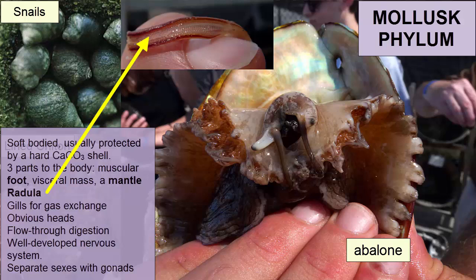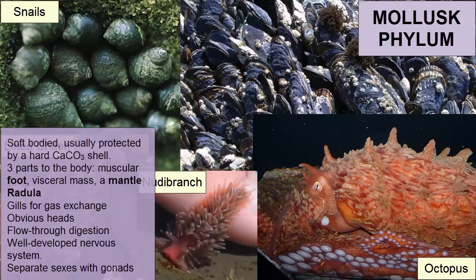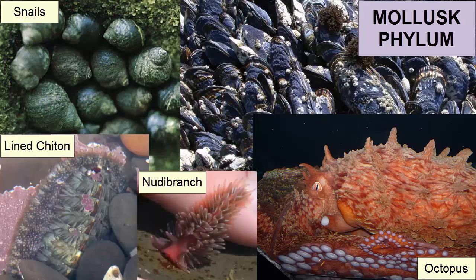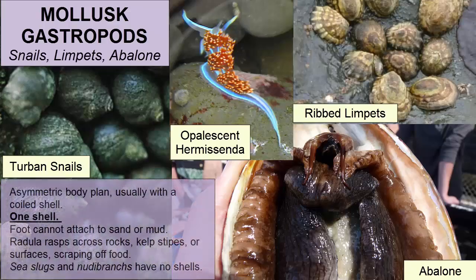Most molluscs also have gills for gas exchange, obvious heads, flow-through digestion, and a well-developed nervous system. Most have separate sexes with gonads. There are four classes of molluscs. Class Polyplacophora consists of molluscs whose shell has eight articulated plates and whose head is reduced; these are also called chitons.